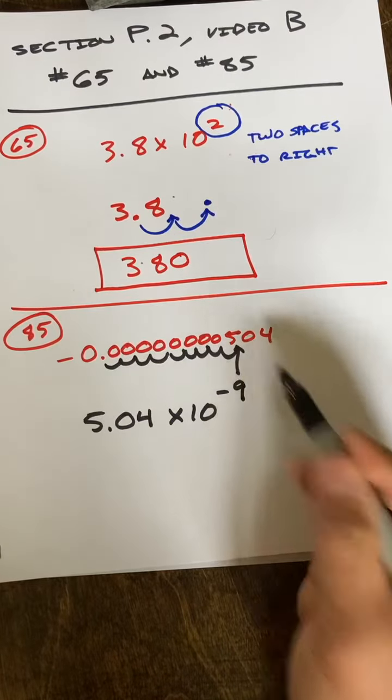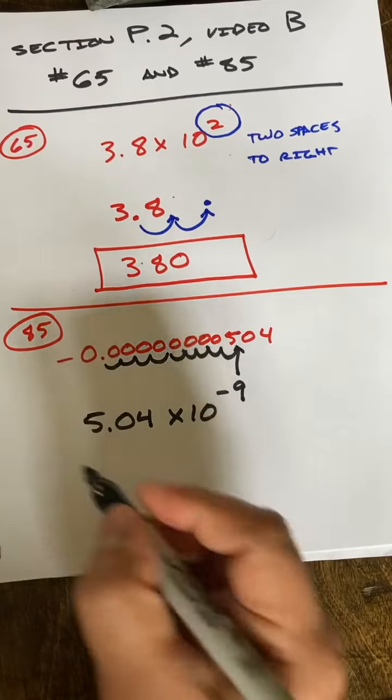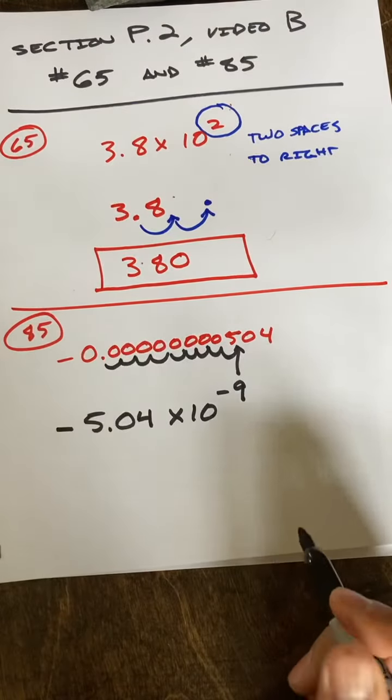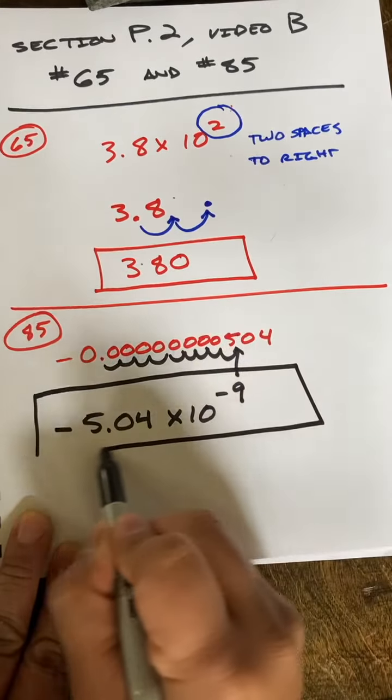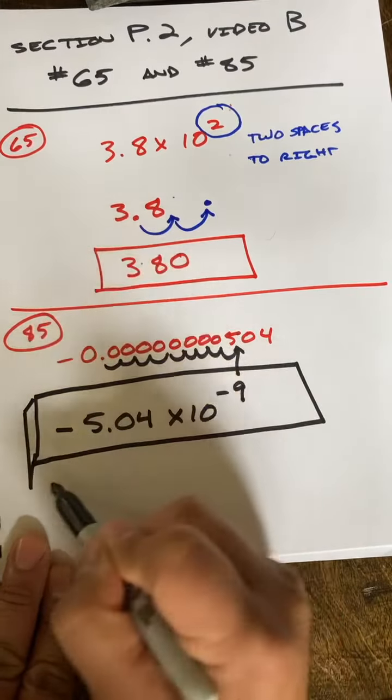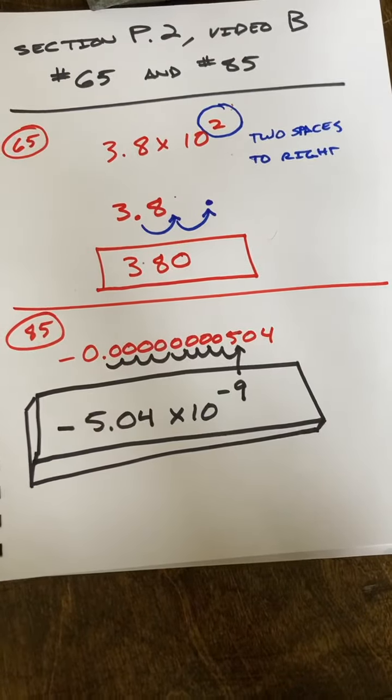Nine to put the decimal in the correct place. Okay, now the number started out as negative, so I'm going to keep that negative right there. Okay, and that is the answer for 85, my friends. Thank you much.